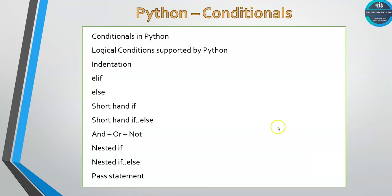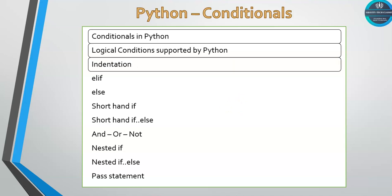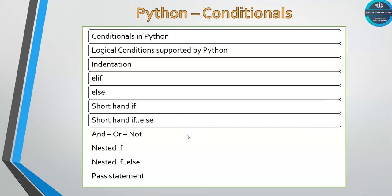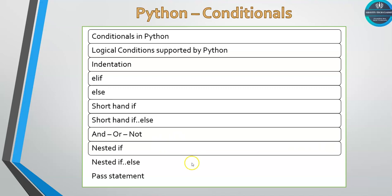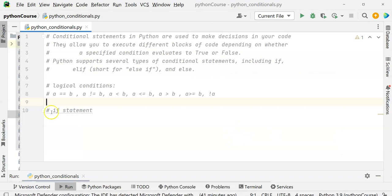Let's look at the high-level agenda of what exactly we are going to cover. We will see what conditionals are in Python, how logical conditions are supported, which logical conditions are supported by Python, how indentation matters, what is elif, what is if, how the else clause looks, what shorthand if and shorthand if-else are, what the 'and', 'or', and 'not' logical connectives are, what nested if is, what nested if-else is, and the pass statement. Then we'll go to the IDE.